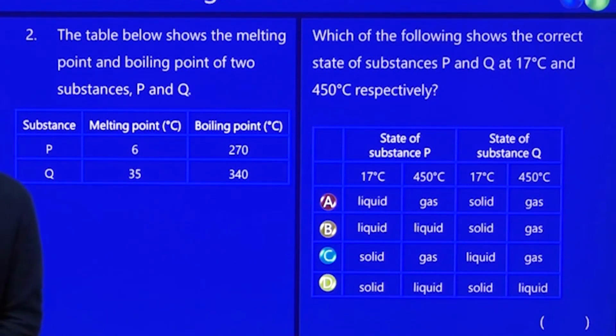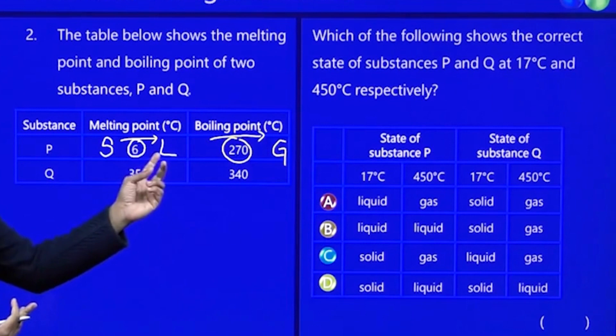So, if you are given a substance P, let's look at P only, and you are given a melting point, that means from solid to liquid, this is the temperature which will change it from a solid to a liquid. This is the temperature 6 because that is the melting point. Similarly, if you want the liquid to boil off, then you have at 270, once you reach 270, it becomes a gas. So that is the temperature at which it will convert the liquid state to a gas state.